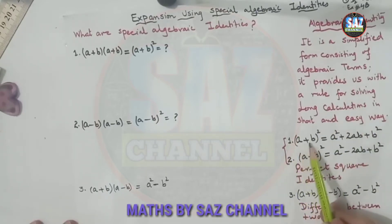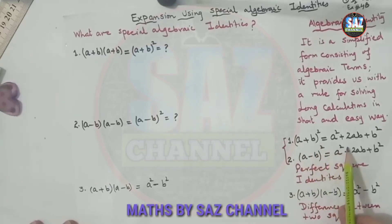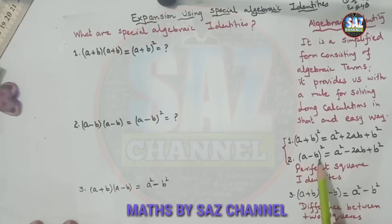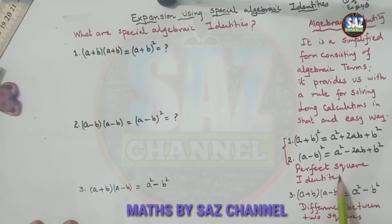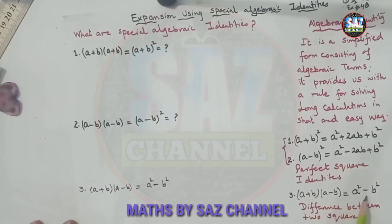The first one is (a + b)² = a² + 2ab + b². The second one is (a - b)² = a² - 2ab + b². These are called perfect square identities with sum or difference. The third one is (a + b)(a - b) = a² - b², which is called the difference of two squares.